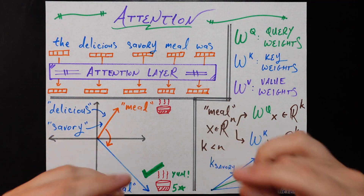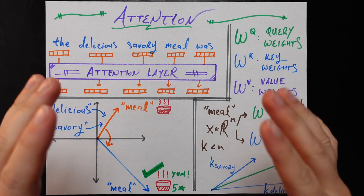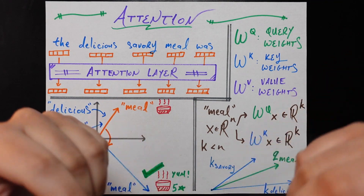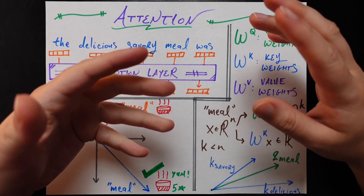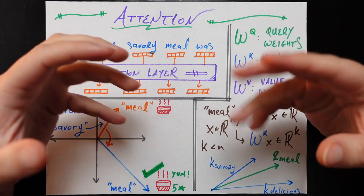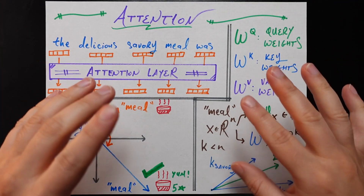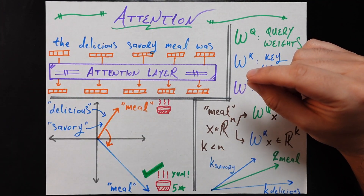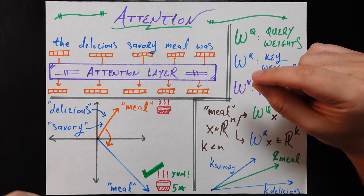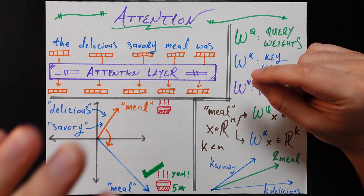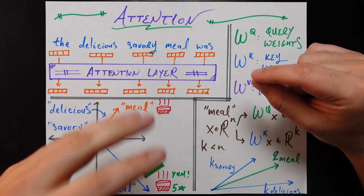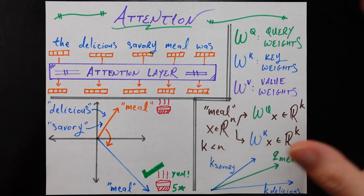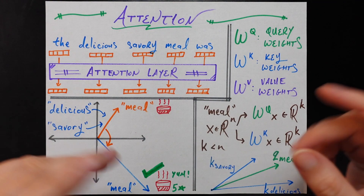Hey everybody, welcome back. Attention is a key topic in understanding transformer neural networks, which are the foundational model powering a lot of these LLM solutions that exist today. We are going to get to the entirety of the math behind transformers in due time, but in this video I want to talk about the math you need to master the concept of attention in a vacuum before connecting all of those pieces, and that's for two big reasons.